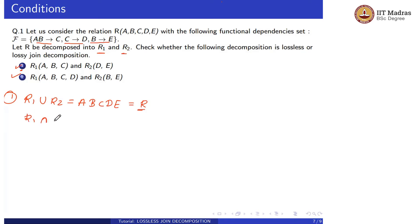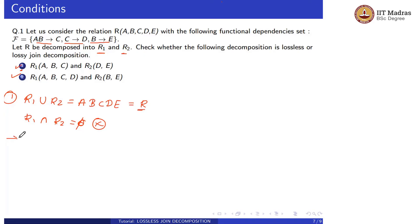Let us check the second condition: R1 intersection R2. Here R1 intersection R2 is empty, meaning there is no common attribute between R1 and R2. So our second condition is not satisfied, and we can say this decomposition is lossy decomposition.